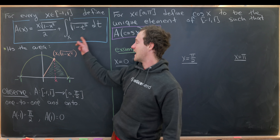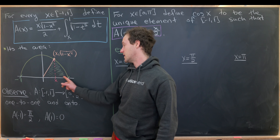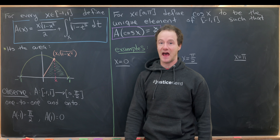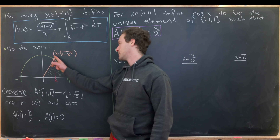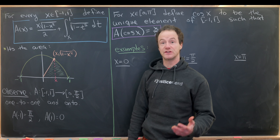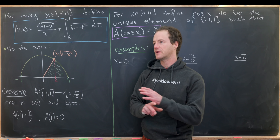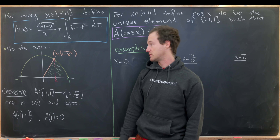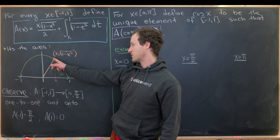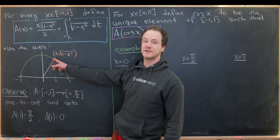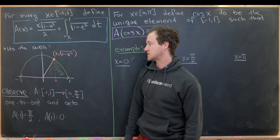This function measures the area of a sector of a half circle. The half circle has equation y equals the square root of one minus x squared — in other words, it's the unit circle, since rewriting gives x squared plus y squared equals one. Every coordinate on the top half of the circle has the form (x, sqrt(1 minus x squared)).